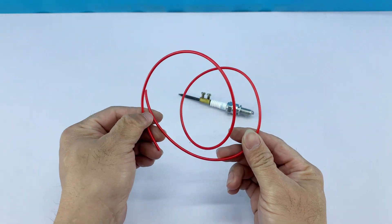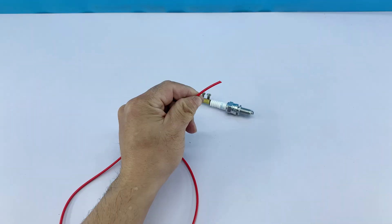Then, I'll take a red wire and firmly attach one end to the top of the spark plug assembly.